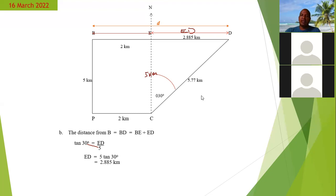So ED would be 2.885 kilometers. So now we can clearly calculate the distance BD. Before we get to that distance, if we were to use sine to calculate ED, this is what we would have. And so we'd still work out to have the same result, the same value.